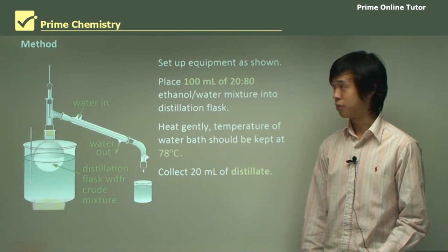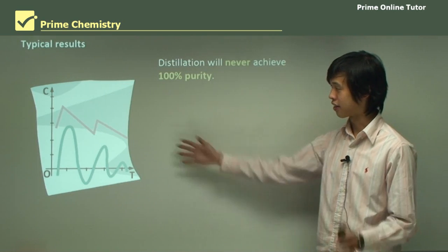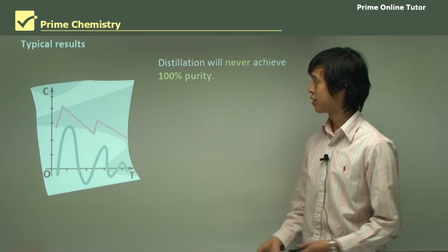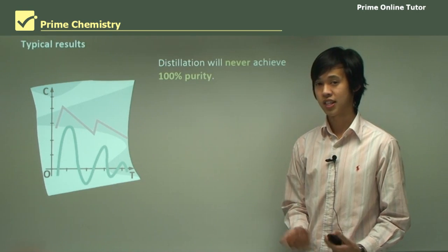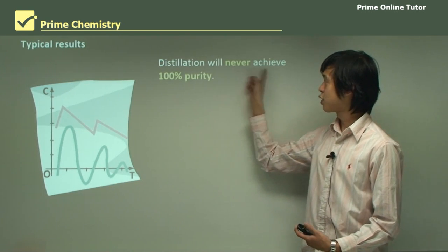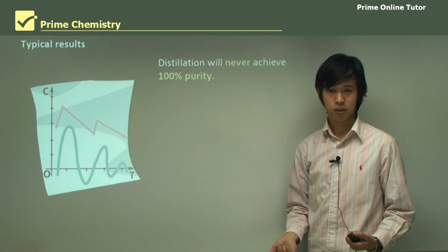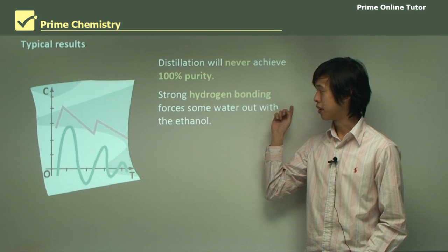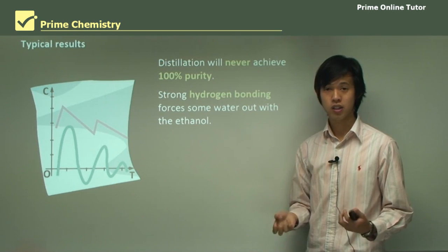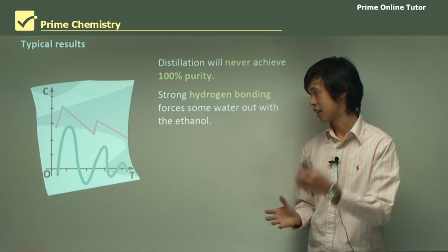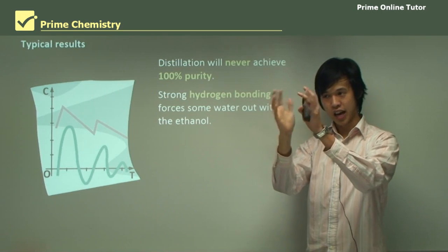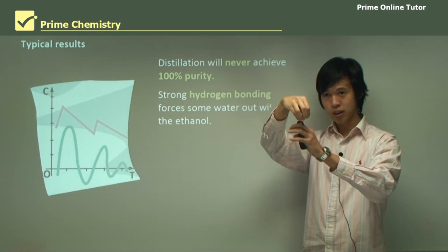So if that makes sense, we'll move on to our typical results. So results, we're quite result-oriented here, so we always want to know what we'll see. So this distillation process will never quite achieve 100% purity, or it will never come close, simply because the strong hydrogen bonding forces some water to always be attached to the ethanol as it comes out. So when we heat it, we're heating this ethanol, so an ethanol molecule might come out.